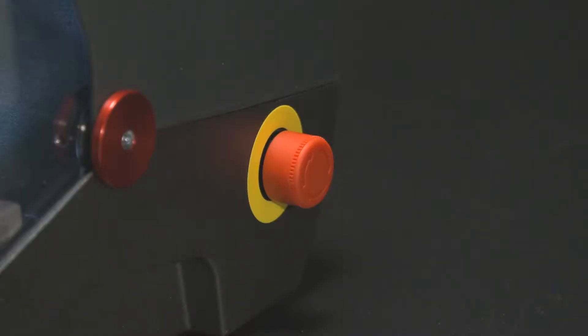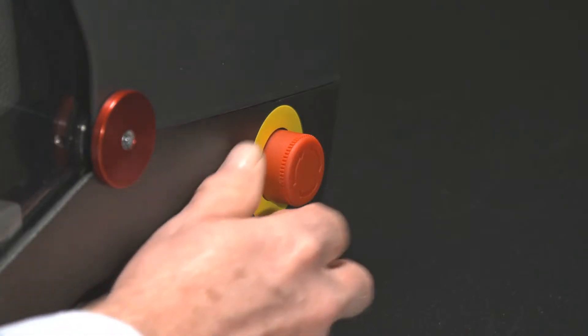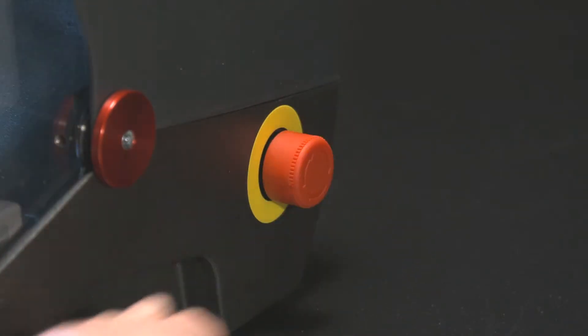The emergency stop button is a safety feature located on the right side of the machine. Push in to immediately stop the machine. Rotate the stop button clockwise to restore power. This can also be used to power up the machine when not in use.